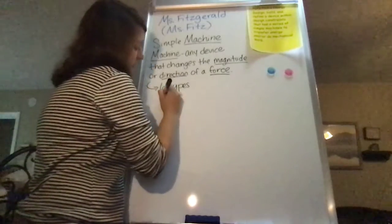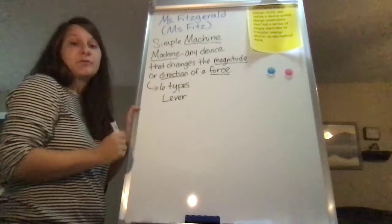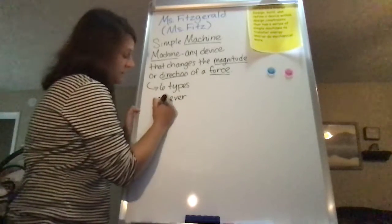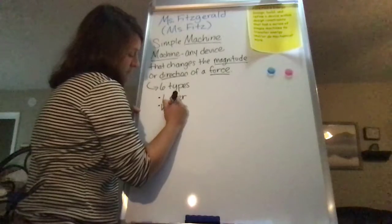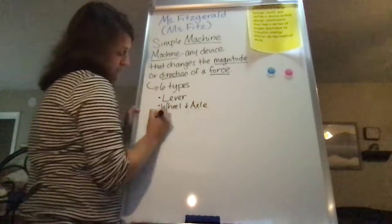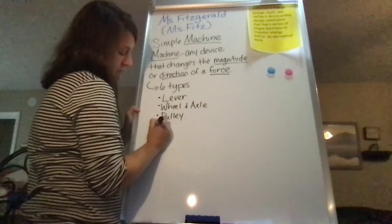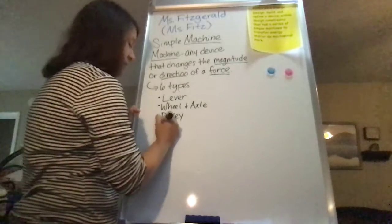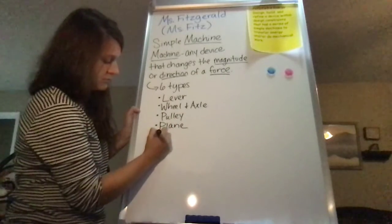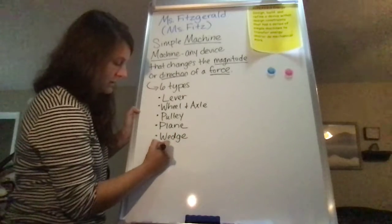Okay, the first type is a lever. And I'm going to have you write these down and then we'll go through one by one and I'll explain what they are. The next is a wheel and axle. Then we have a pulley. A plane or an incline plane. A wedge. And a screw.